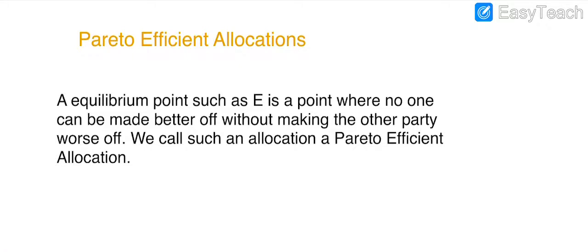Our second case is one where only one person will be in a better condition and the second person will be in the worst condition. Such an allocation — where one person is in a better condition and the second person is in the worst condition — is called a Pareto efficient allocation.